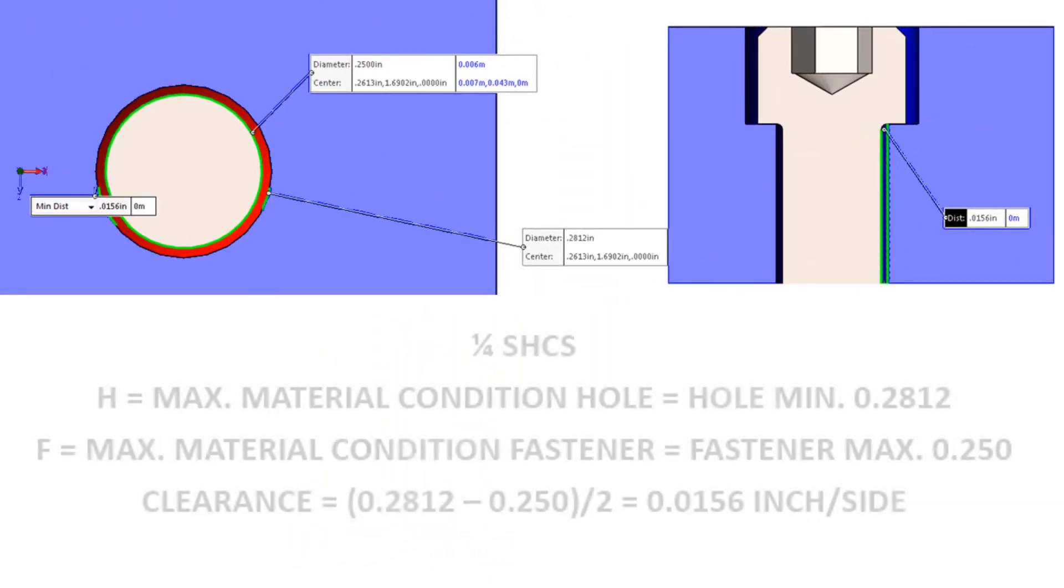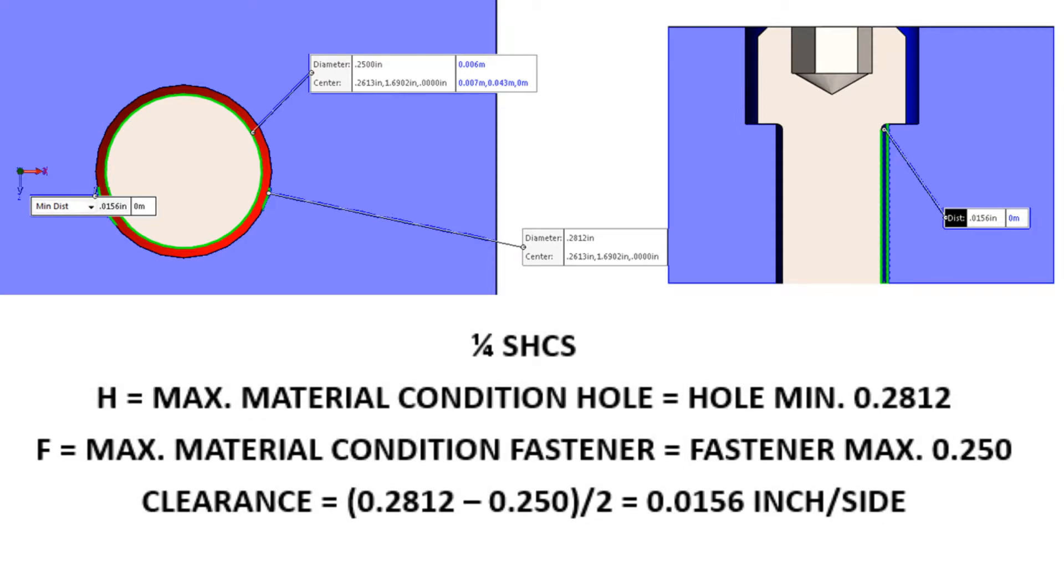When a single fastener is placed in the center of a clearance hole, the fastener will have half of the difference of the hole diameter and the bolt diameter as shown by the red cylinder. In the case of this quarter inch socket head cap screw in a loose fit clearance hole, there will be a 15 and a half thou radial gap.